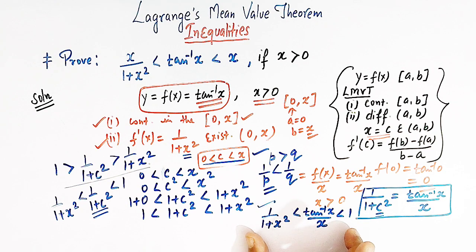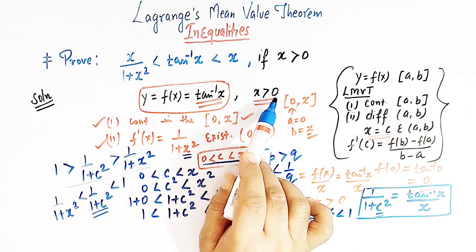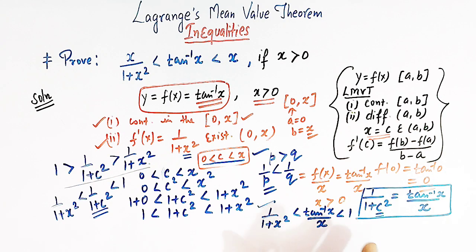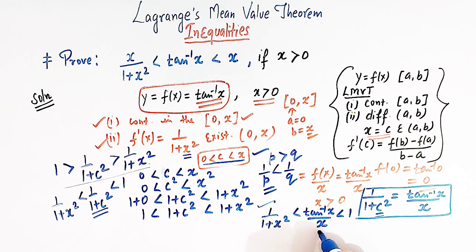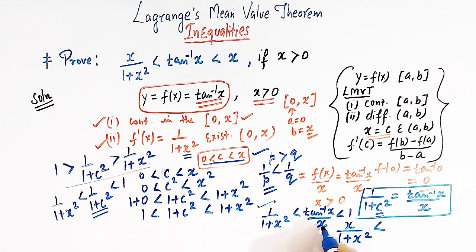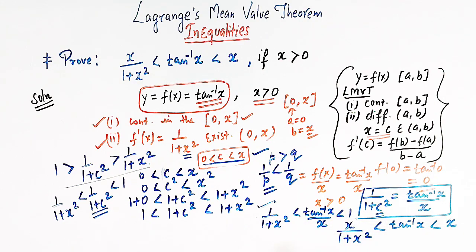Now we multiply throughout by x. Since x is greater than 0, we can multiply without changing the direction of the inequality. Multiplying by x gives x/(1 + x²) < tan inverse x < x, which is the desired inequality.